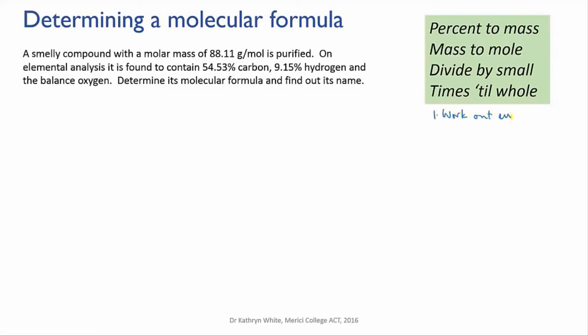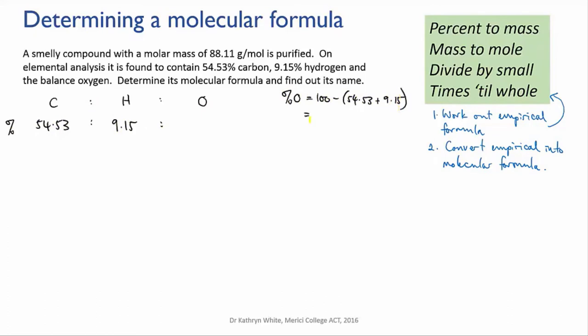So the way we're going to tackle this problem is first to determine the empirical formula from the mass percentage information, and then to use the true molar mass to determine the molecular formula. So we'll go back to our little rhyme. First we'll write out the percentages, calculating that oxygen must be 36.32% as we go. Next we convert those to masses.